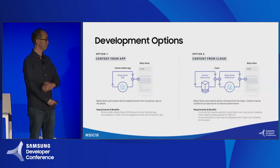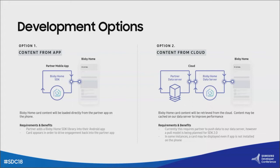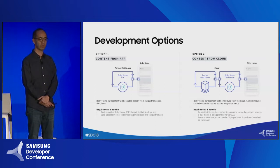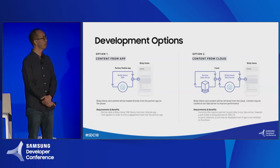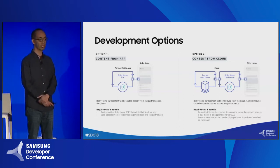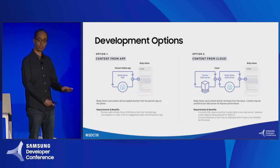To populate the content on your card, there are two approaches. The first approach is to have your app on the user's device share data to Bixby Home. This is the fastest way to personalize your card, which we recommend because we see personalization as one of the leading factors to increase engagement back into your app. The other approach is to have your server push content to our server whenever you want the card to change — the next time the user swipes onto Bixby Home, they'll see your updated card content.